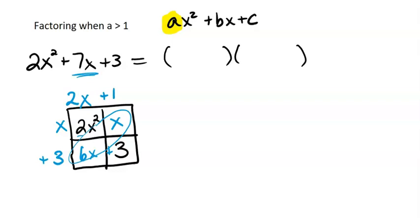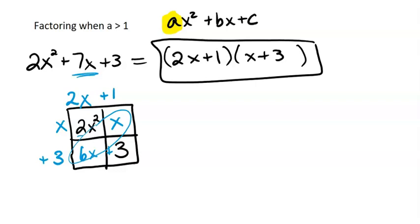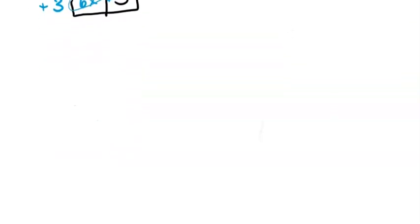That doesn't always happen, and sometimes we have to flip-flop them. So our binomials are 2x plus 1, that was our binomial on the top, and x plus 3. So that's how that one factors. Let's try another one.